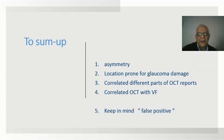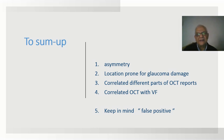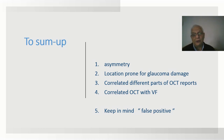To summarize, we can increase our confidence in results by checking for asymmetry, checking for locations prone to glaucoma damage, and correlating the different parts of the OCT with each other and with the visual field.